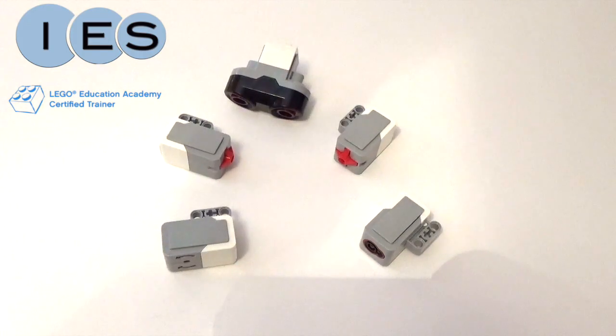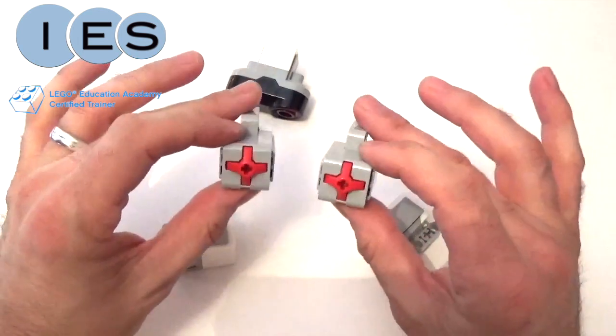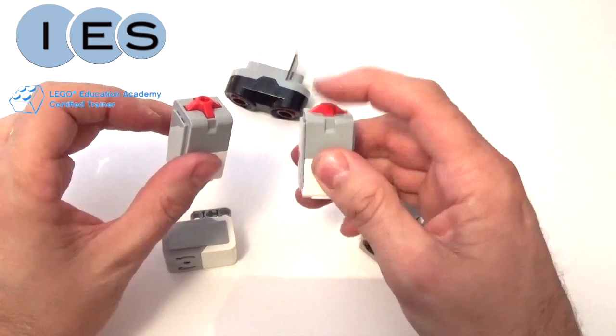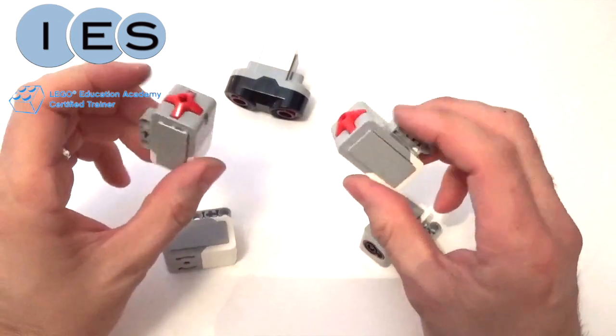Here we can see the range of sensors that come inside the Mindstorms resource. There are four different types of sensors, so let's start with this one here. You can see we have two of these. These are touch sensors, they behave like switches, and they have three different states.